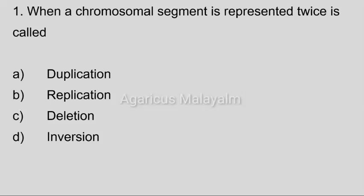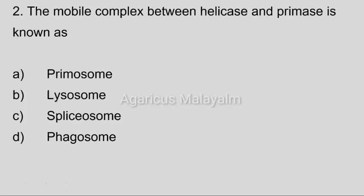First question. When a chromosomal segment is represented twice, it is called: Option A, Duplication; Option B, Replication; Option C, Deletion; Option D, Inversion. Correct answer: Option A, Duplication.